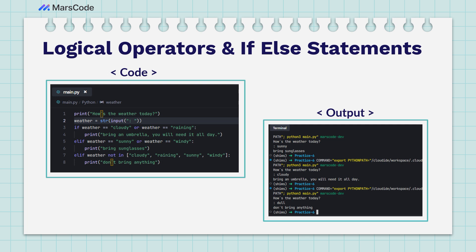In the last statement, we're saying ELIF weather is NOT in the list: cloudy, raining, sunny, or windy. You can see I'm using the NOT logical operator along with a list to tell the compiler that if the user's weather response is not one of those four values — cloudy, rainy, sunny, or windy — then it's just going to print: don't bring anything.